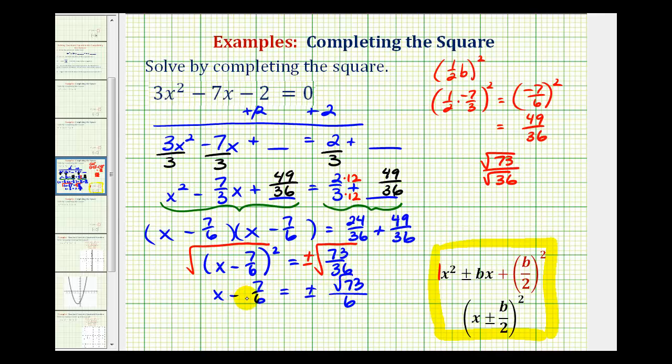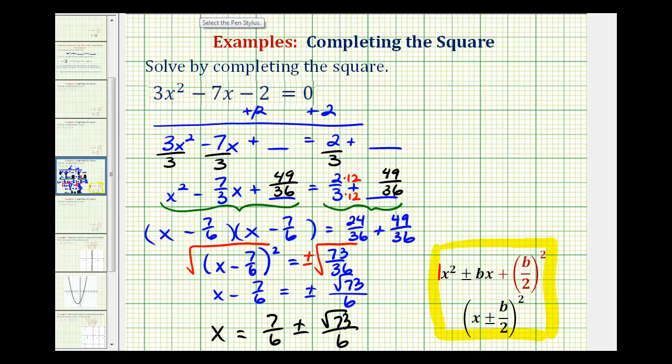Now to solve for x, we'll add 7/6 to both sides of the equation. So we would have x = 7/6 ± √73/6. Because of the √73, we can tell we have two real irrational solutions.